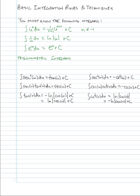Here are the first two trig integrals: the integral of sin(u) with respect to u is −cos(u) + C, and the integral of cos(u) with respect to u is +sin(u) + C. Remember that when integrating, the signs for sine and cosine are opposite of what we get when we differentiate, so keep track of that.